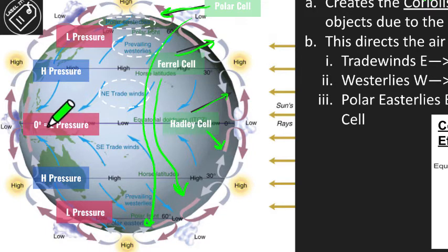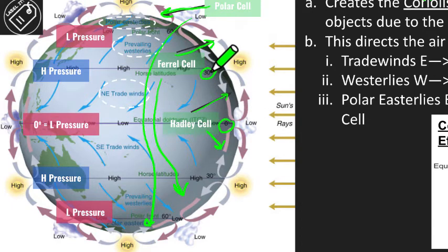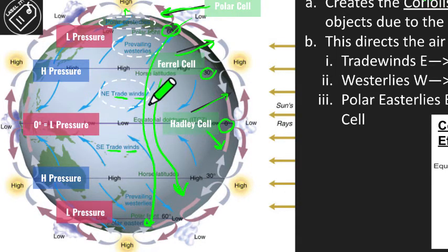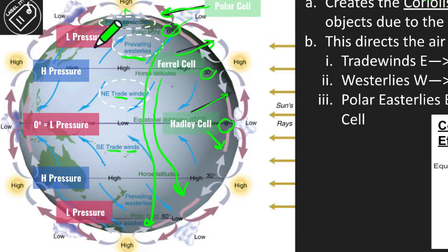As a result of these cells, we get alternating pressure bands: low pressure at the equator (0 degrees), high pressure at 30 degrees, low at 60 degrees, and high right at the poles. These bands help determine our air currents. Near the equator we have trade winds, which go from east to west. Then we have westerlies, which come out of the west and go west to east. Then we have polar easterlies, which come out of the east and go west. All of these will need to be labeled on our maps.